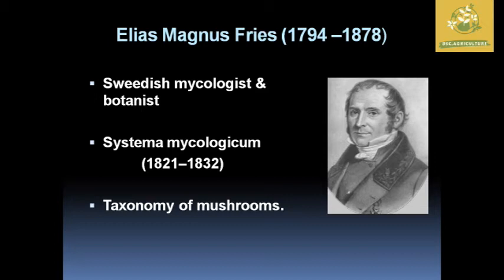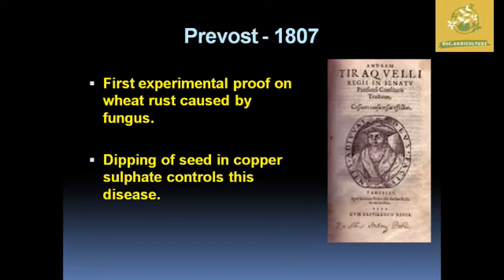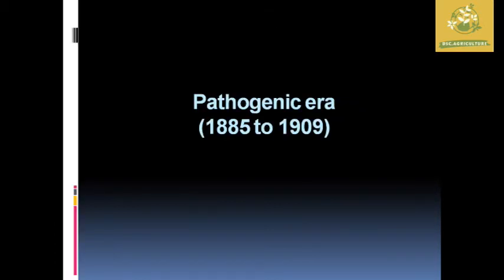Elias Magnus Fries, the Swedish mycologist and botanist, gave us the 'Systema Mycologicum' — the taxonomy of mushrooms. Prévost gave the first experimental proof that wheat rust is caused by a fungus, and he used copper sulfate to dip seeds, which controlled wheat rust disease.